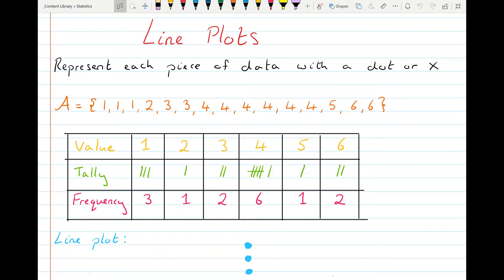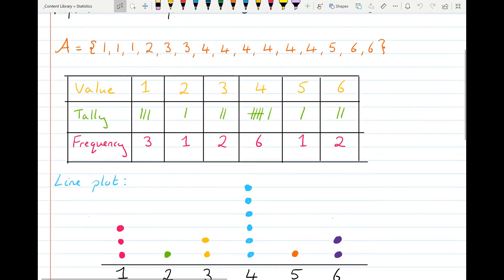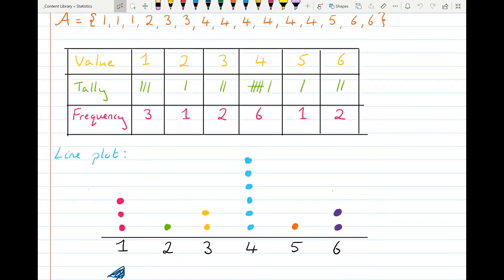A line plot is quite simply just representation of how frequently each piece of data appears, and you can use dots or X's to represent this.